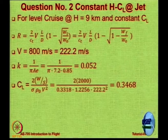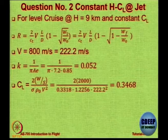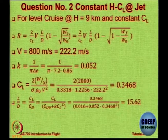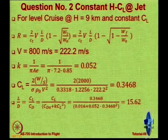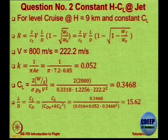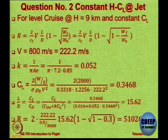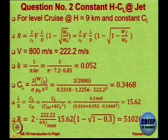C_L = 2(W/S) / (σ ρ₀ V²), where σρ₀ is the density by definition. L/D = C_L / C_D = C_L / (C_D0 + K·C_L²). C_D0 is given as 0.016, and K is now calculated. This gives L/D = 15.62. Notice this is not L/D max — in fact it will be 0.866 times L/D max.